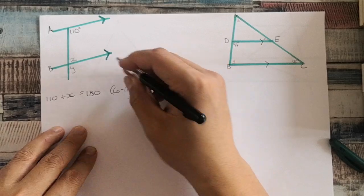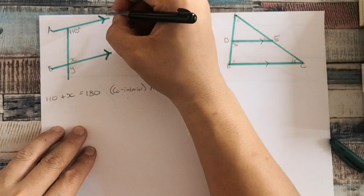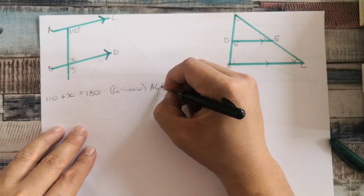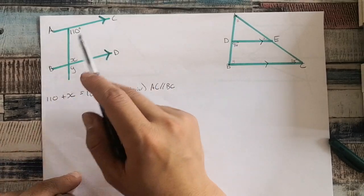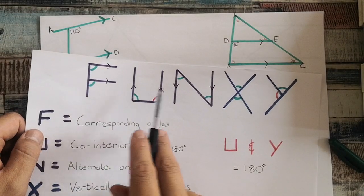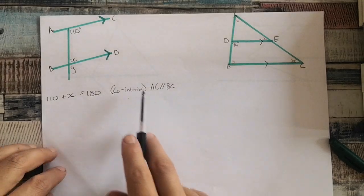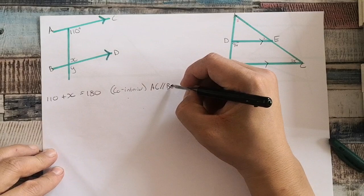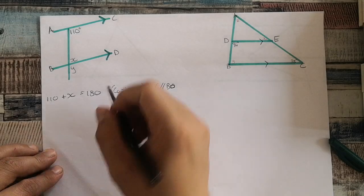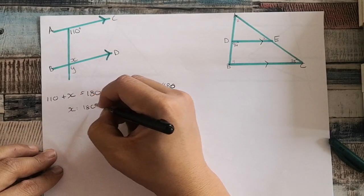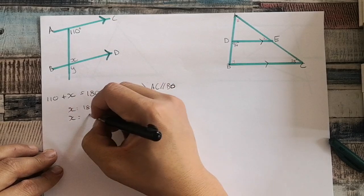And then you must also state why — because line AC is parallel to BD. Because you are using either your F, your U, or your N, you need to state which lines are parallel. So I'm telling you that AC is parallel to BD. Then, I want X alone, so X is equal to 180 minus 110. Therefore, X is equal to 70 degrees. So that X over here is equal to 70 degrees.